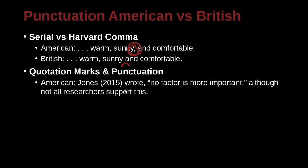Now let's look at question marks and punctuation with quotations. Here's an example: Jones 2015 wrote, 'No factor is more important,' although not all researchers support this. This is an excellent but slightly confusing example. We have a quotation here, cited to Jones 2015, so we're not plagiarizing. There is a comma just before the quotation, separating our introductory clause 'Jones wrote' from the quote itself. After the closing quotation mark, we have my own writing: 'although not all researchers support this.' He did not say that — I said that.